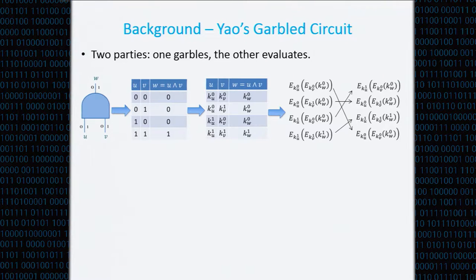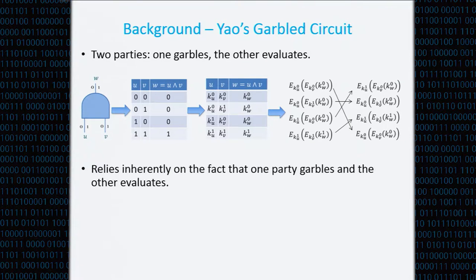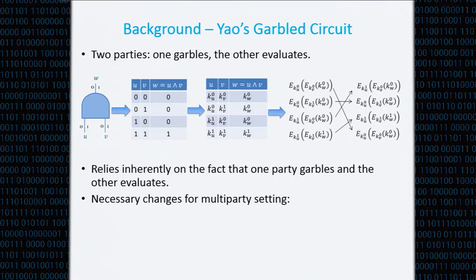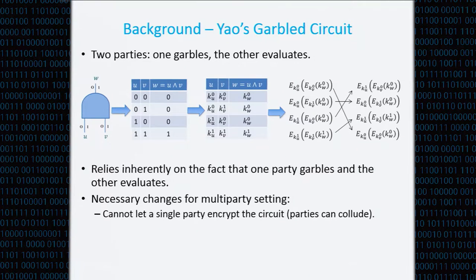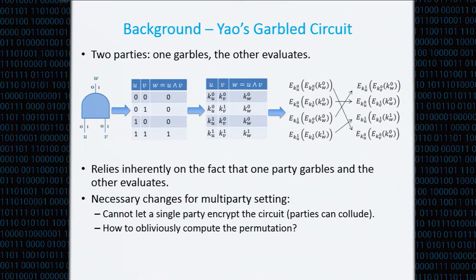This also assumes that the evaluator must know somehow that he decrypted correctly. This solution relies very heavily on the fact that it is a two-party solution. If we want to make it into a multi-party solution, several changes have to be made. First, we can't let a single party do all the encryptions, because if an encrypting party colludes with any evaluating party, all security is lost.